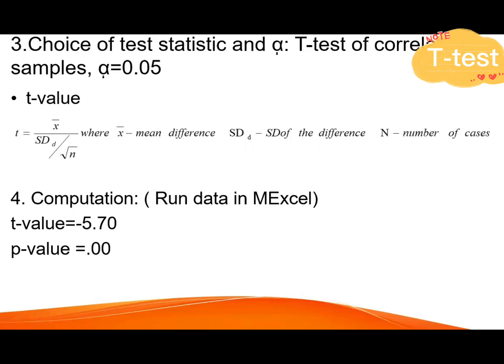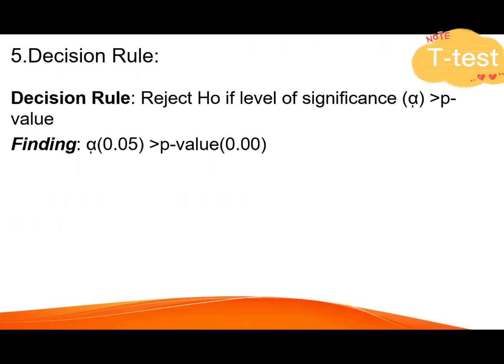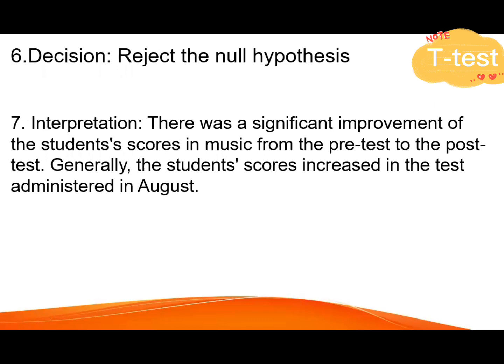Since the p-value is less than 0.05, the decision rule says you must reject the null hypothesis if the level of significance is greater than the p-value. Since 0.05 is greater than the p-value of 0.000, the finding leads us to reject the null hypothesis and accept the alternative hypothesis.